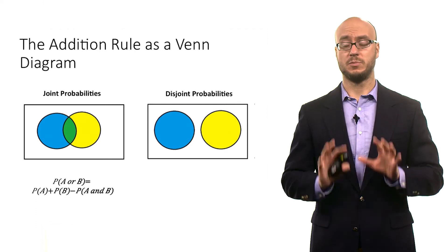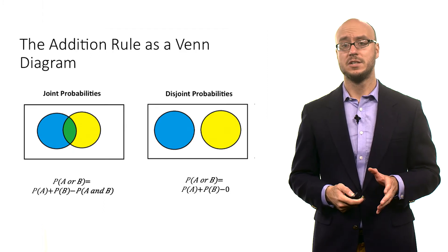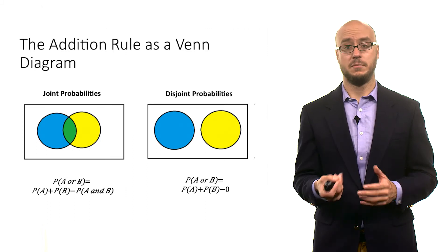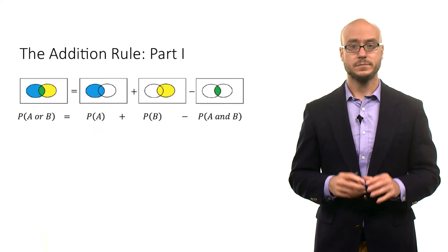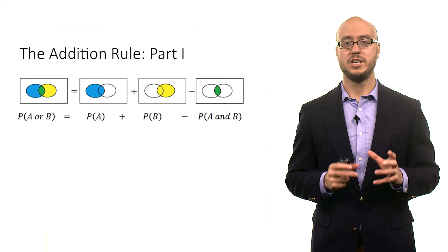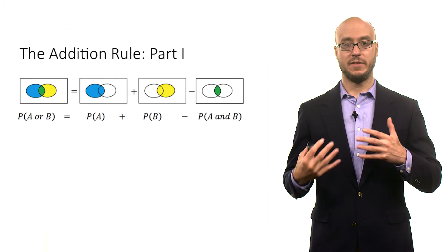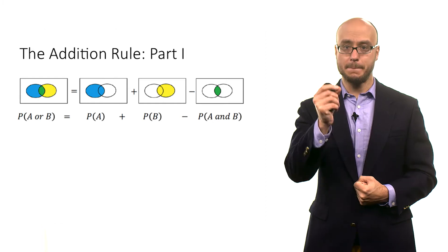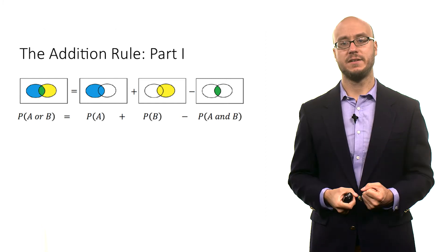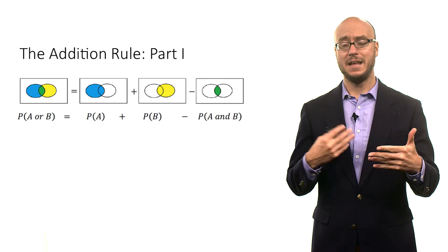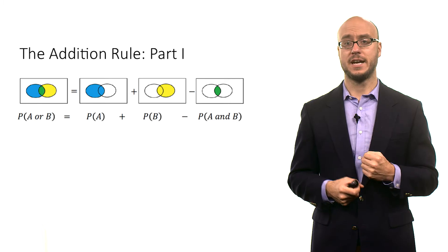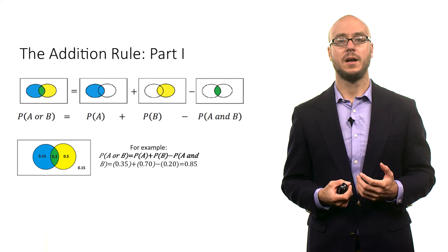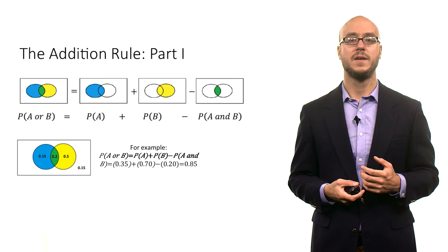However, with disjoint events, the probability of A and B is zero, so the addition rule is a little simpler: it's simply P(A) plus P(B). To be perfectly clear about what the addition rule is doing — it gives the probability of at least one event occurring. It's the overall probability of A plus the overall probability of B minus that intersection. If we add A and B without subtracting that intersection, we are double counting it.